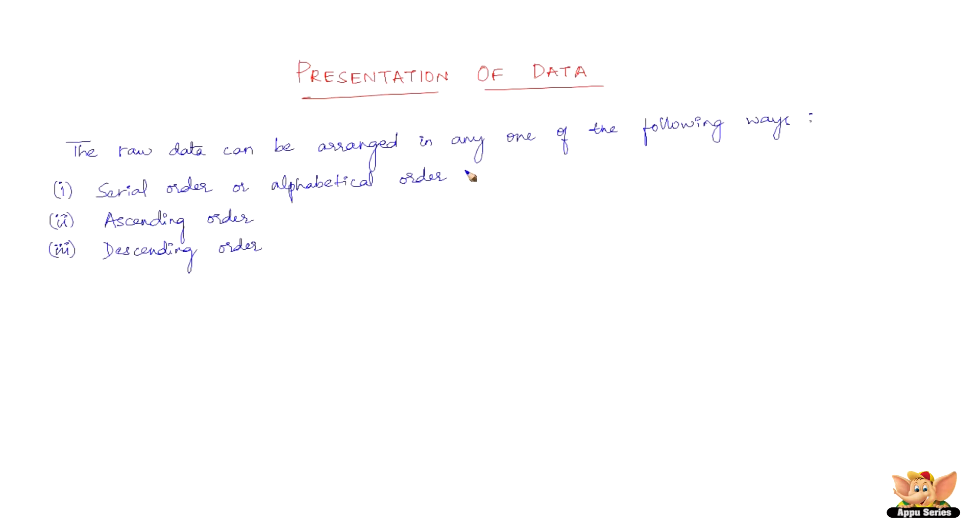The raw data can be arranged in any one of the following ways: first one being serial order or alphabetical order, the second one being ascending order, and the third one being descending order. The raw data when put in ascending or descending order of magnitude is called an array.